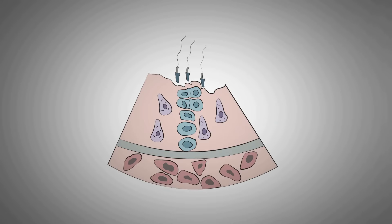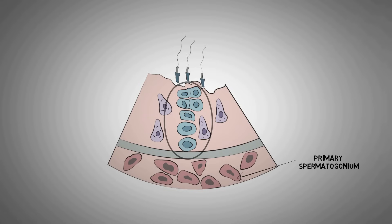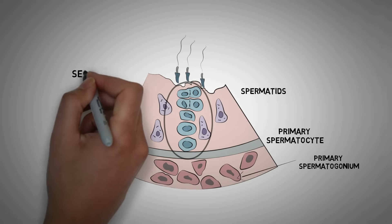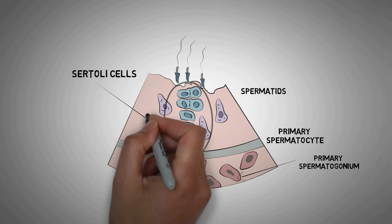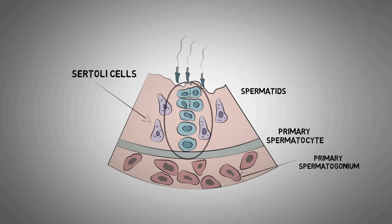Looking at the wall of the seminiferous tubule in a bit more detail, the primary spermatogonia are located in the basal layer of the wall, and in the center you can see the various divisions from primary spermatocyte through to the spermatids. During all these cell divisions, the Sertoli cells give support and nutrition to the developing gametes.